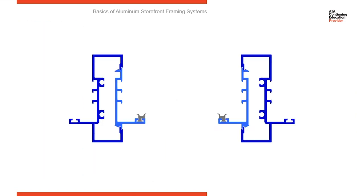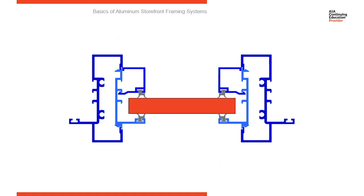Here's what storefront systems used to look like about 50 years ago. We call this fin and stop. You've got a tubular shape — a two-piece tubular member with a fin that projects into the opening. That gives you a nice opening where glass can easily be set in, and then a stop is snapped in on the inside. This is very easy to glaze because you had a nice open area that glass can just be set right into.